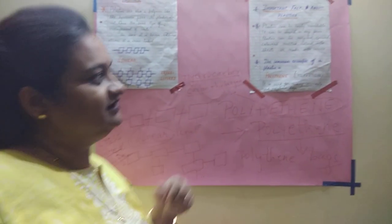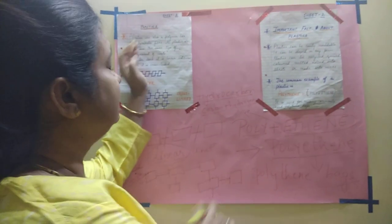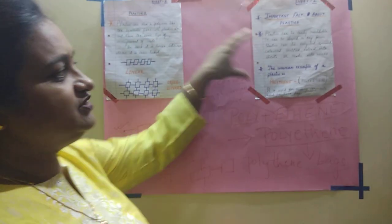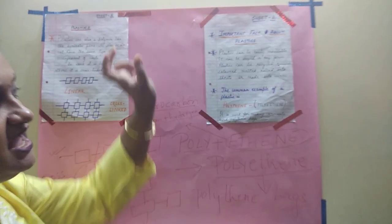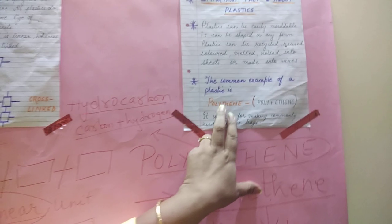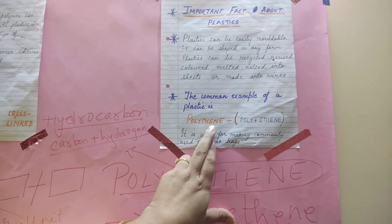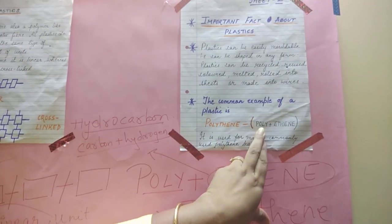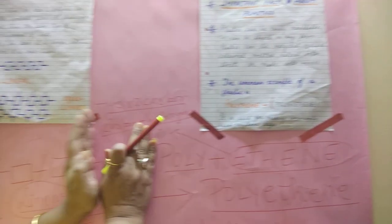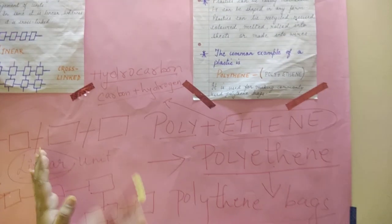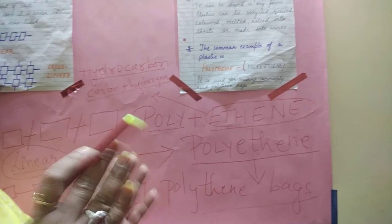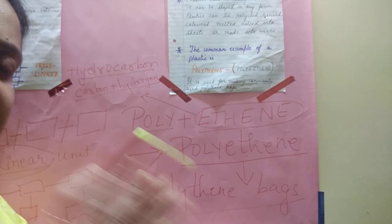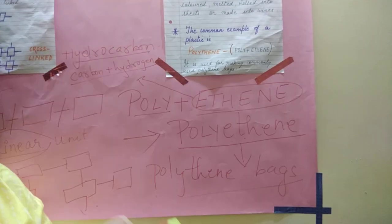So we have finished with plastics — the arrangement of plastics, two important facts: one common to all plastics, and a common everyday example which is polyethene, made from poly plus ethene. Now we come to the main part — the types of plastics. Let's see what the two types of plastics are.